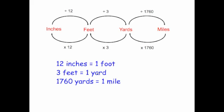There are 3 feet in one yard, so to go from feet to yards you divide by 3, and to go from yards into feet you multiply by 3. And to go from yards into miles: 1,760 yards is one mile, so to go from yards into miles you divide by 1,760, and to go from miles into yards you multiply by 1,760.